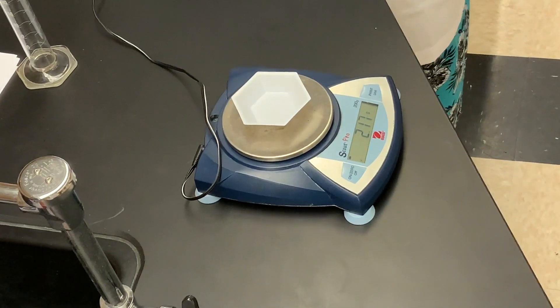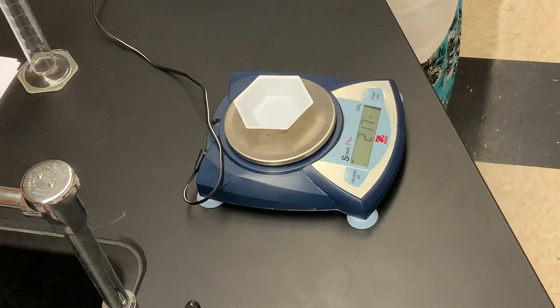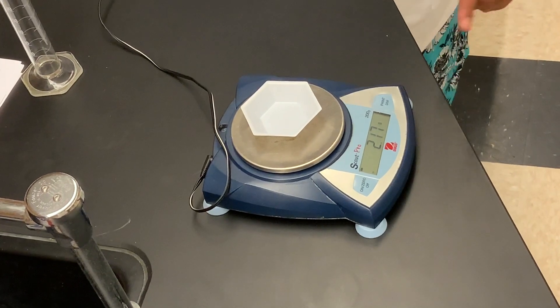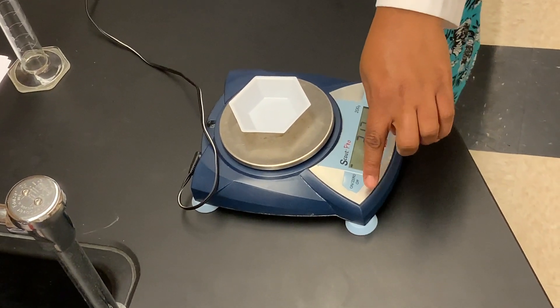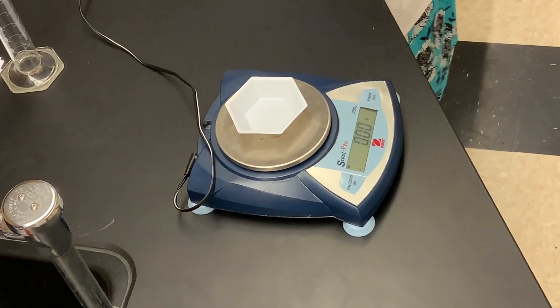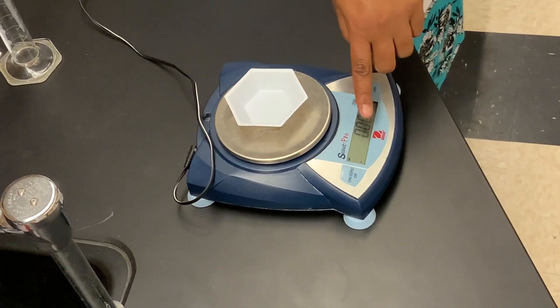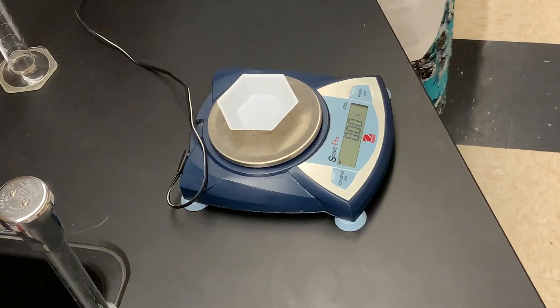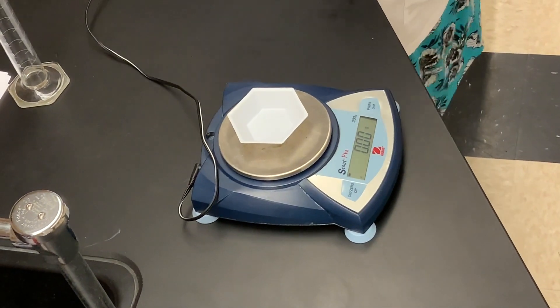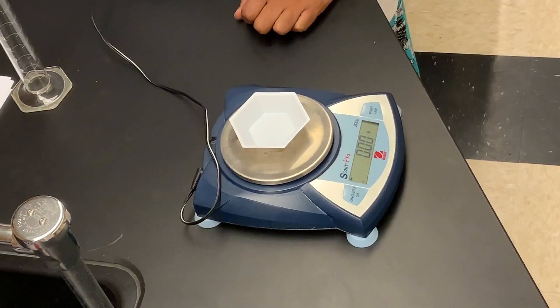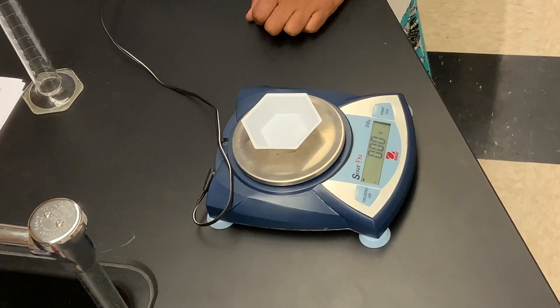But we're not interested in the mass of the weigh boat. We want the mass of a penny. So what we'll do is hit the on/zero button, and that's going to tare the balance. Now we see the zeros appearing again. We've eliminated the mass of the weigh boat because we're interested in the mass of the penny.